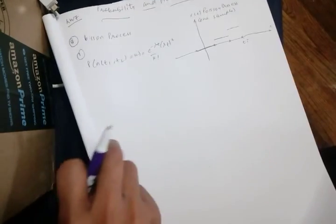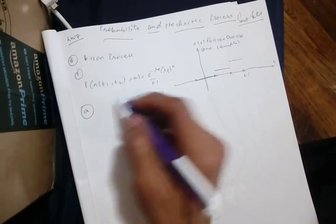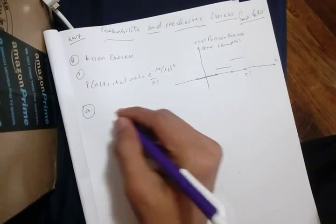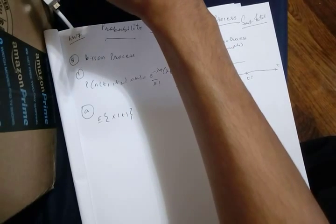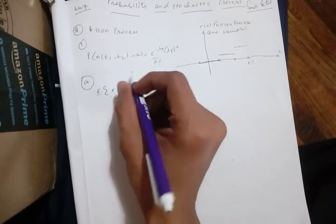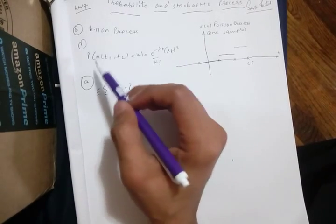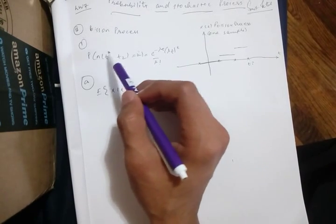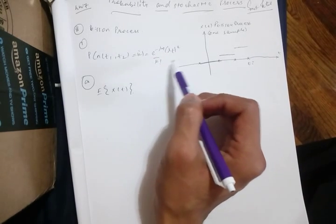We need to find the expected value. For part (a), we need to find the expected value of X(t), where X(t) is a Poisson process. Its definition is: in the time interval T1 and T2, if it occurs n times, this product equals K.